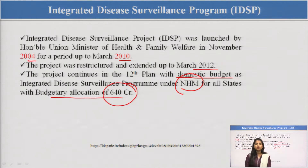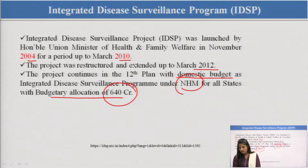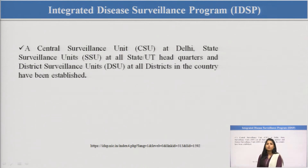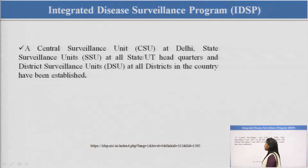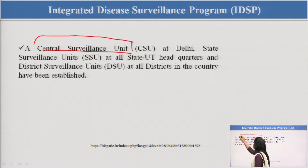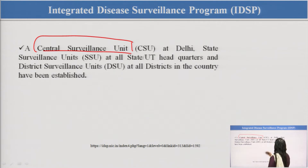We will discuss the points under the Integrated Disease Surveillance Program and the units under it. We have units at the central level, at the district level, and at the state level. The Central Surveillance Unit, which monitors all disease patterns, is called the CSU and is located in Delhi.